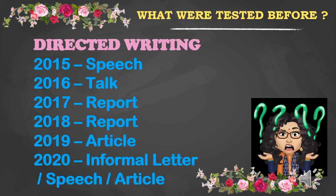Let's look at the past five years questions for SPM Directed Writing section. In 2015, the question was on speech. 2016 was talk. 2017 was report, 2018 again report, and 2019 was an article. So what can be forecasted for 2020? Informal letter, speech, and article. Please pay extra attention on these three types, but also do a little revision on how to write a report and informal letter so you are ready to face the paper if another format is tested.